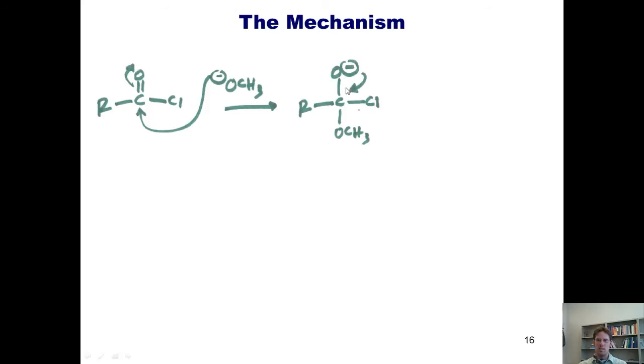The negative charge on the oxygen then comes down and closes here like a trap door to form a double bond here, pushing off the chloride as a leaving group. This then gives this product, which is my methyl ester and chloride leaving group taking off.